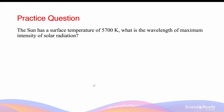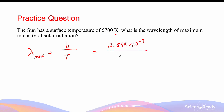One example is the sun, with a surface temperature of 5700 kelvins. Using Wien's displacement law: λ_max = b/T = (2.898 × 10⁻³) / 5700 ≈ 5.08 × 10⁻⁷ meters = 508 nanometers. This concludes the video on quantum theory and blackbody radiation.